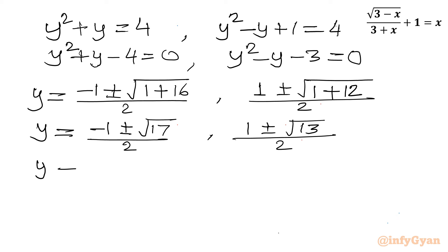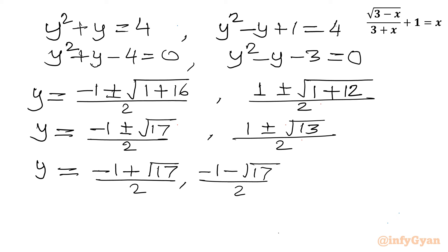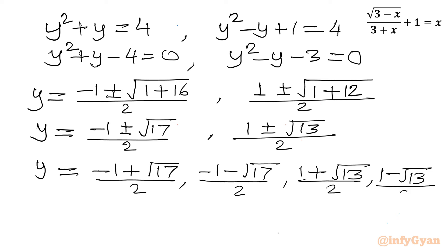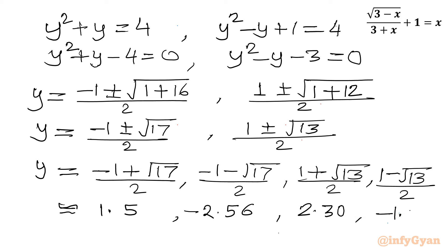So the four solution values of y are: (−1 + √17)/2 ≈ 1.56, (−1 − √17)/2 ≈ −2.56, (1 + √13)/2 ≈ 2.30, and (1 − √13)/2 ≈ −1.25.